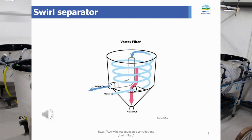Another common method to remove solid particles is the swirl separator, also called a radial flow vessel. It is a conical-shaped vessel where water enters tangentially from the bottom or top, creating a downward vortex that directs suspended materials to the bottom where sludge deposits and can be removed by siphoning or a valve. Clean water leaves the vessel from the top via an overflow pipe and returns to the system.